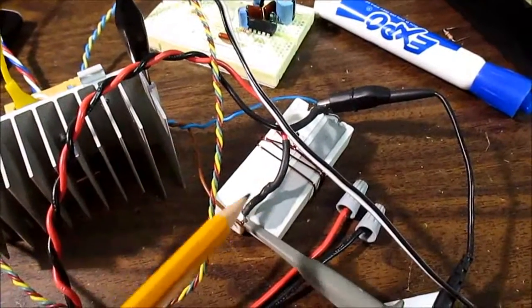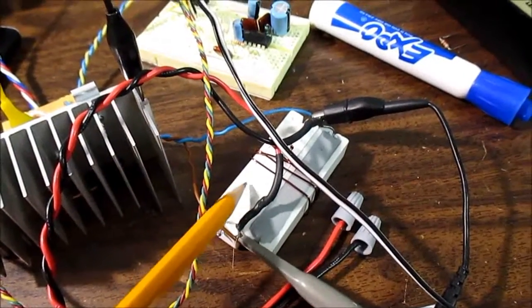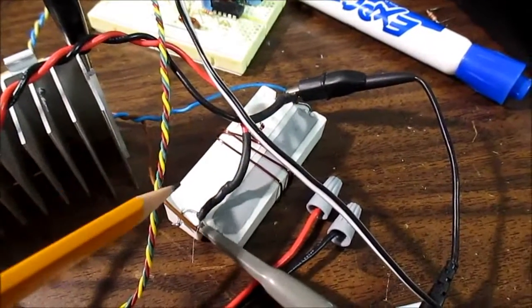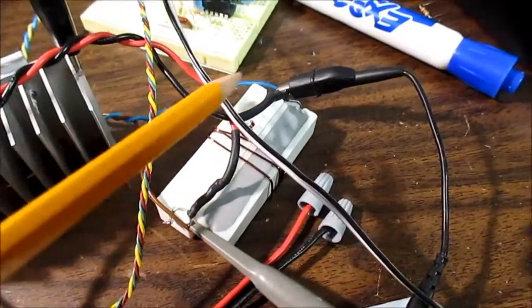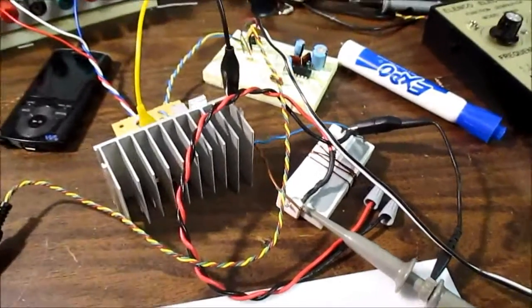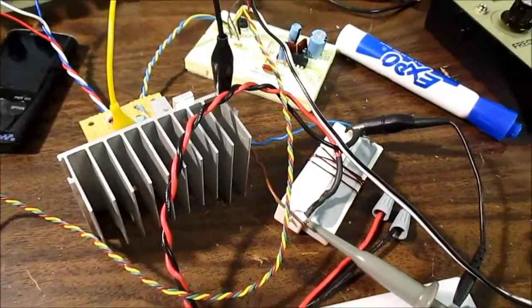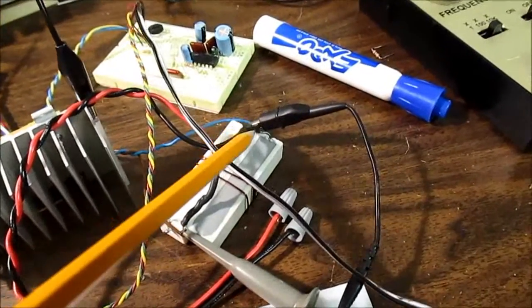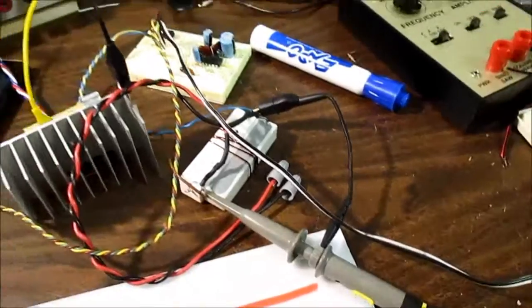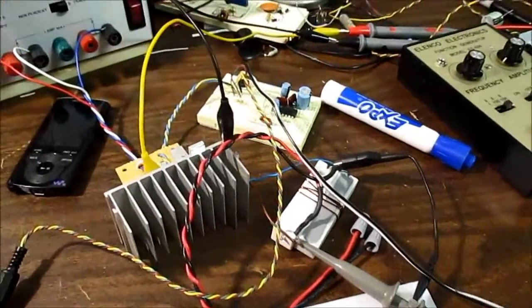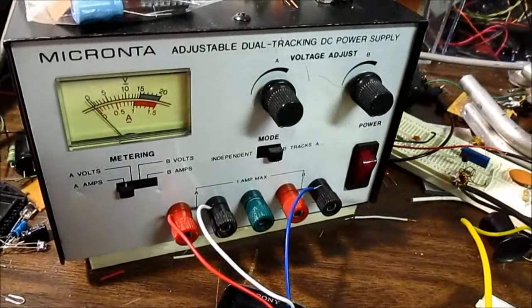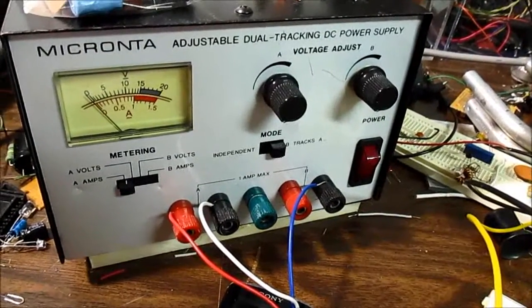I'm going to test it with these 4 ohm non-inductive resistors connected to the scope. I soldered these output wires right to the resistors so I don't have any connection loss issues. Right at the output here is the scope probe, and we'll just vary the voltage on my power supply and take some measurements.